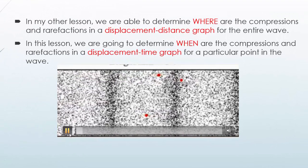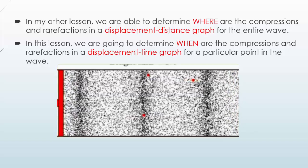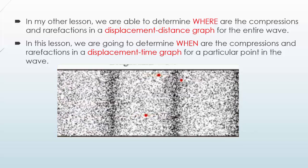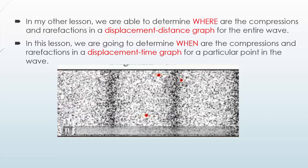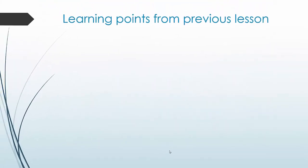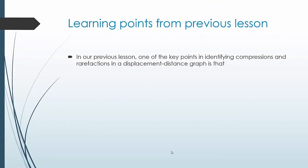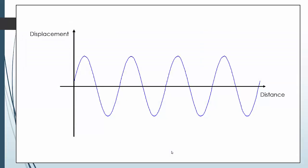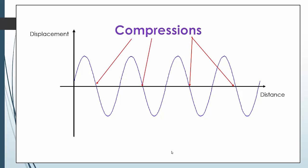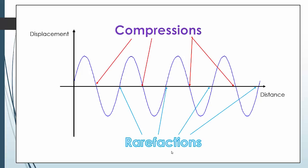In this lesson we are going to determine when are the compressions and rarefactions in the displacement-time graph at a particular point in a wave. We want to find out when is it a compression and when is it a rarefaction. One of the key points in identifying compressions and rarefactions in a displacement-distance graph is that both compressions and rarefactions occur at a point where displacement is zero.